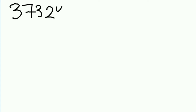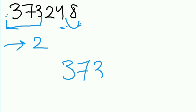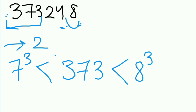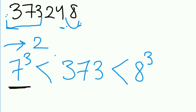Let's say 373248. If we take a look at its last digit, which is 8, we can say the last digit of the cube root will be 2. Now let's take a look at the first three digits, which is 373, which is greater than the cube of 7 and smaller than the cube of 8. So the first digit will be 7, and your answer will be 72.